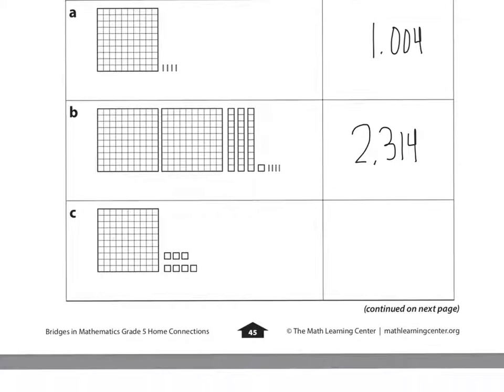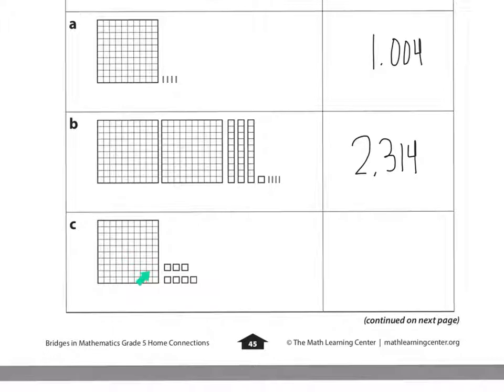Let's look at C. We have one whole and seven hundredths. That's right. How do I write that as a decimal? One and seven hundredths. Like that.